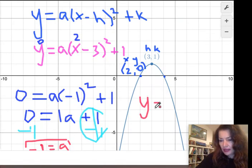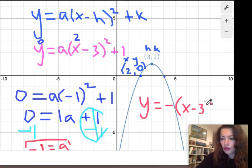And it makes sense that the graph goes down, so the a value is negative 1 times x minus 3 squared plus 1.